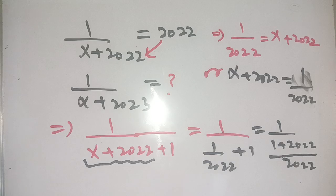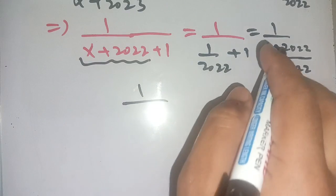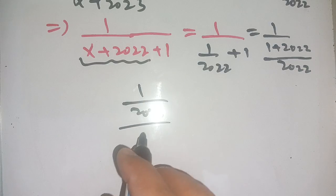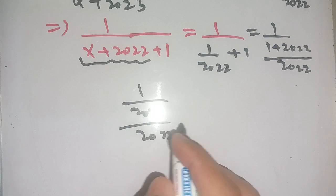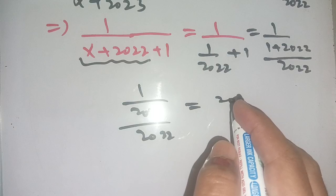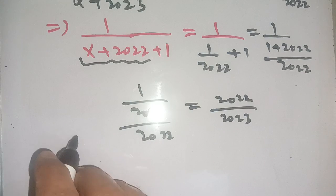Now on the next step we have 1 divided by 1 plus 2022, it becomes 2023 divided by 2022. And we reshuffle it, in the numerator we get 2022 divided by 2023.